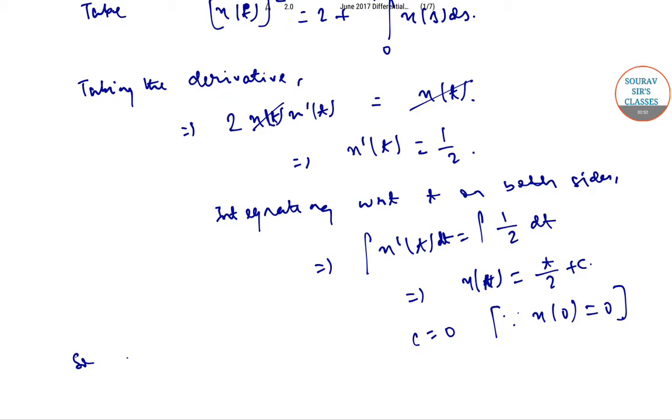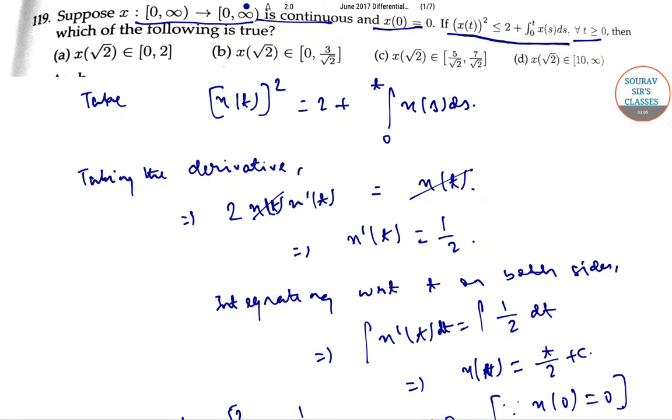So, x(√2) is equal to √2 by 2 which is equal to 1 by √2, thus from this option C and D are out.